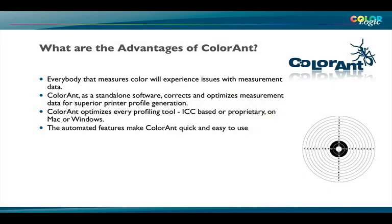The advantages of ColorEnd are clear: everybody that measures color will experience issues with measurement data — no doubt. The more you measure, the more patches, papers, inks, and print systems you have, the more issues you will have. ColorEnd, as a standalone software, corrects and optimizes measurement data before you create the profile. It works on Mac and Windows and can be used in front of every profiling tool, not only Copra — also in front of X-Rite, GMG, CGS, and others. Despite the many functionalities, it also has an automatic feature to make correction quick and easy.